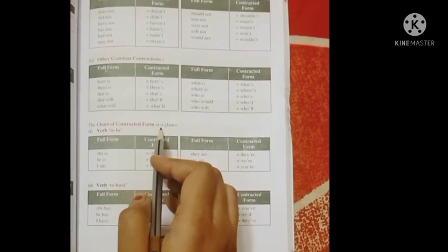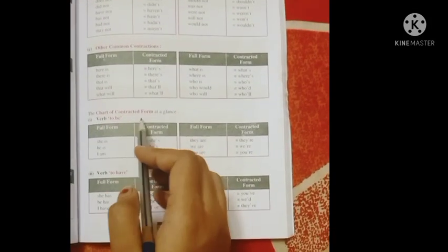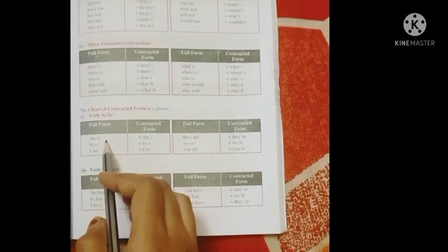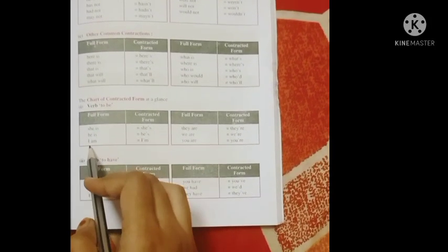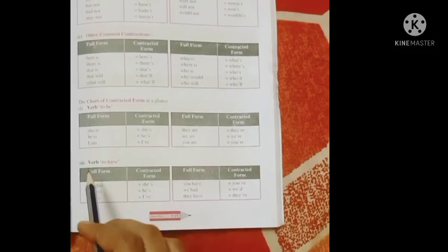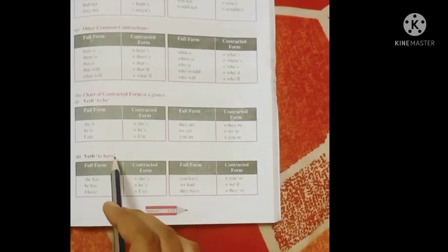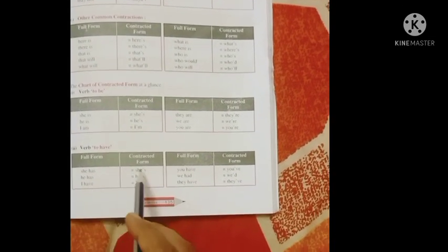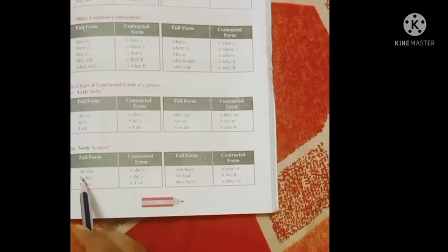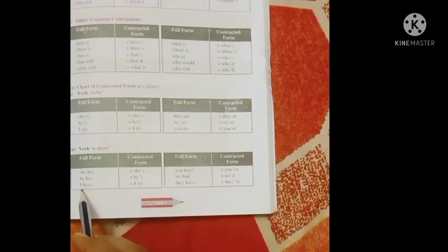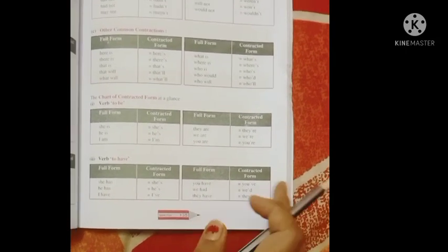Contracted form at a glance. Verb to be: she is, she's. He is, he's. I am, I'm. Okay, here the verb to have: she has, she's. He has, he's. I have, I've. Okay, so read this.